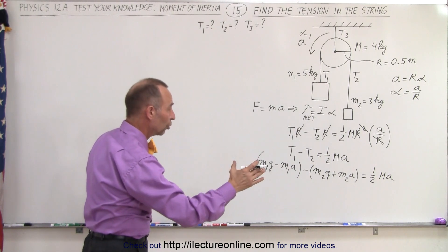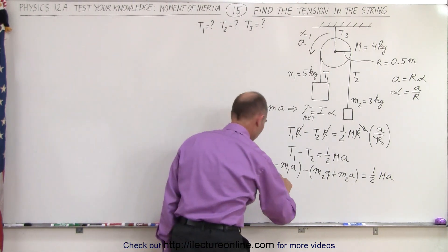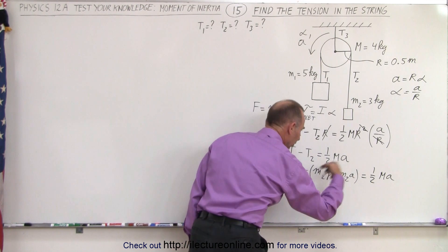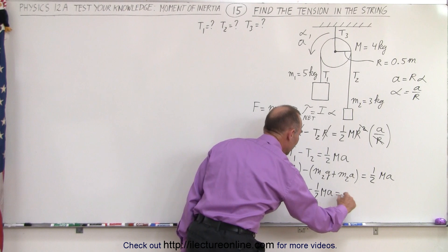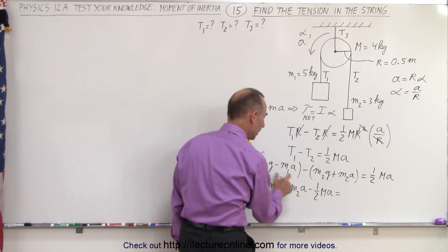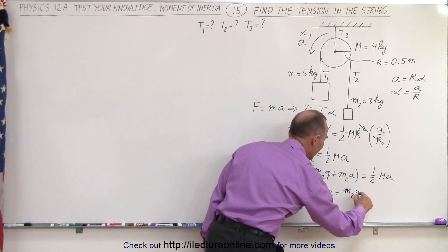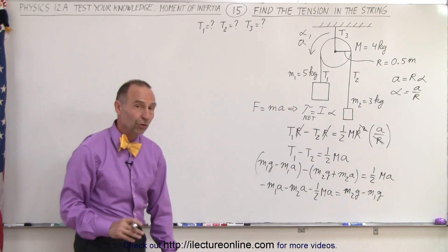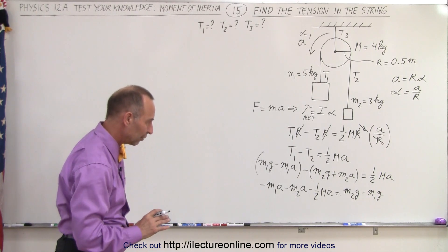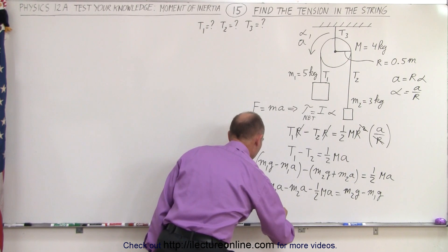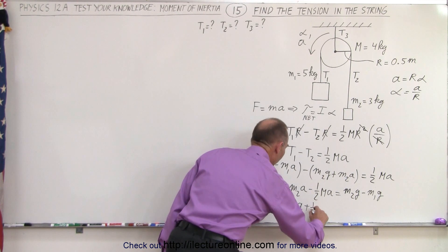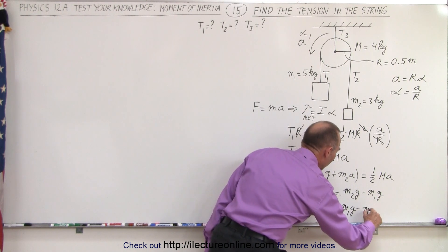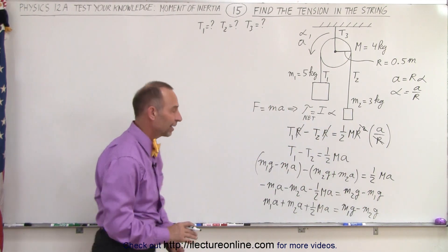Now we need all the terms with a on the left side and everything else on the right side. On the left side we end up with -m1·a - m2·a, and when we move the one-half M·a term to the left side, and bring m1·g and m2·g to the right side, we get: -m1·a - m2·a - ½M·a = m2·g - m1·g. We then multiply both sides by negative one to get rid of the negative signs.